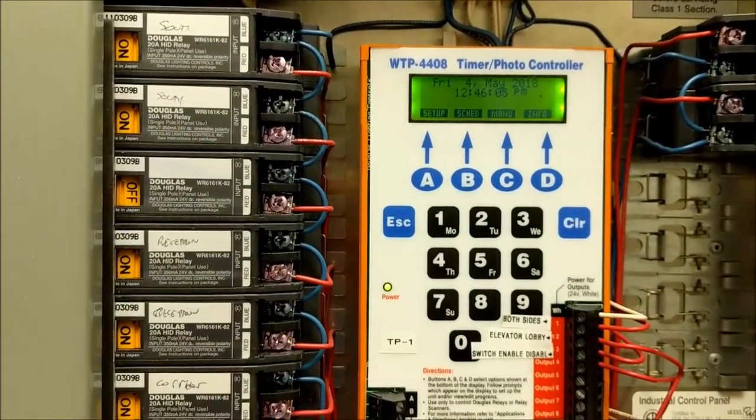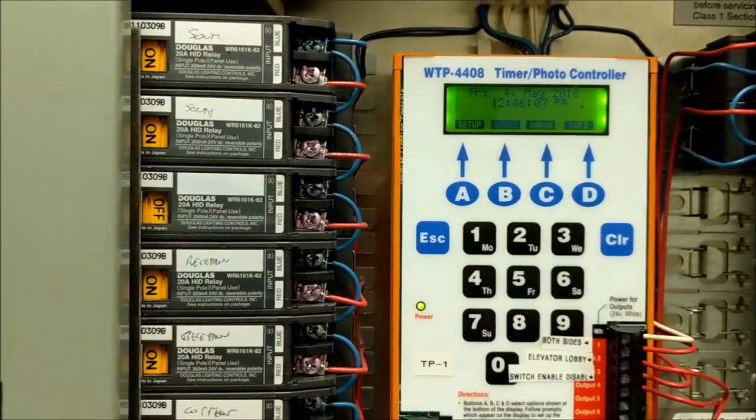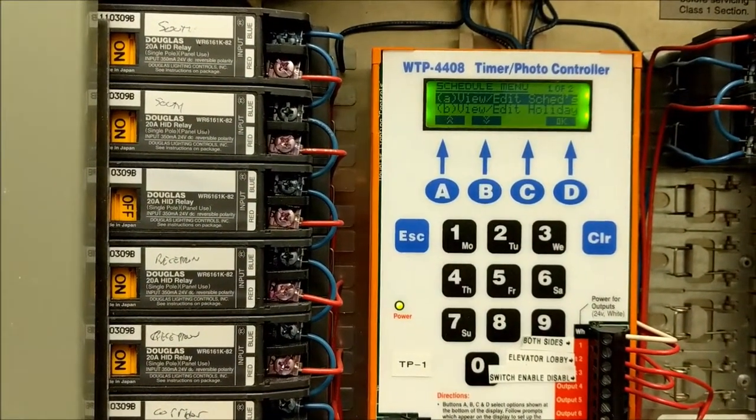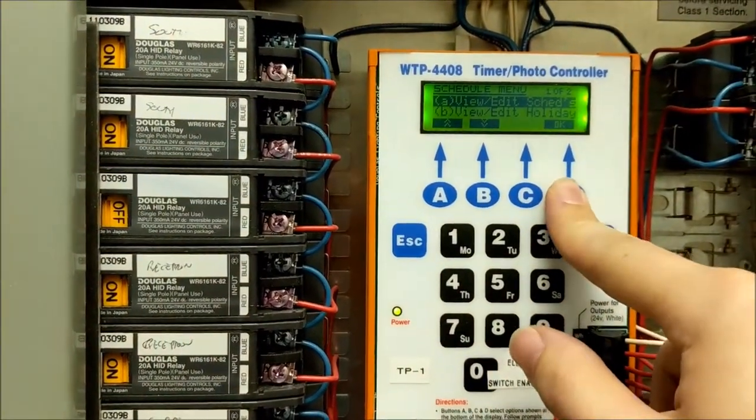If you want to change a scheduled event, you go to Schedule, and then you can view and edit your schedules, which is right there at the top, so you're going to press OK.